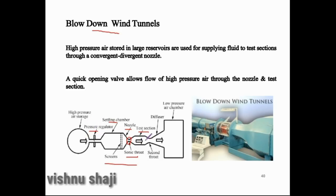This is the test section. The diffuser is in the test section and operates at low pressure in the air chamber. When the pressure is in the air chamber, the pressure is decreased and the velocity is increased. The diffuser is provided in the test section where the pressure is very high. This is the blowdown wind tunnel working.